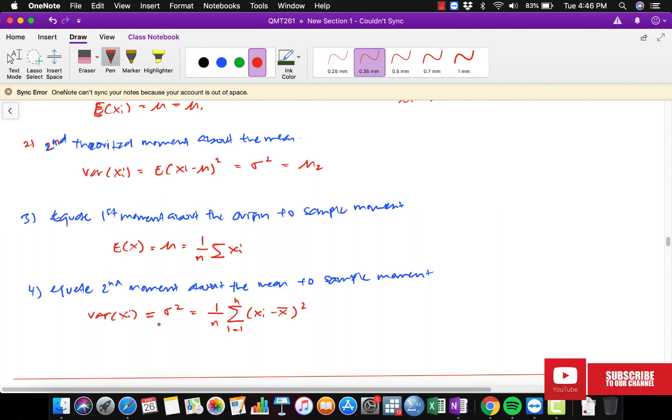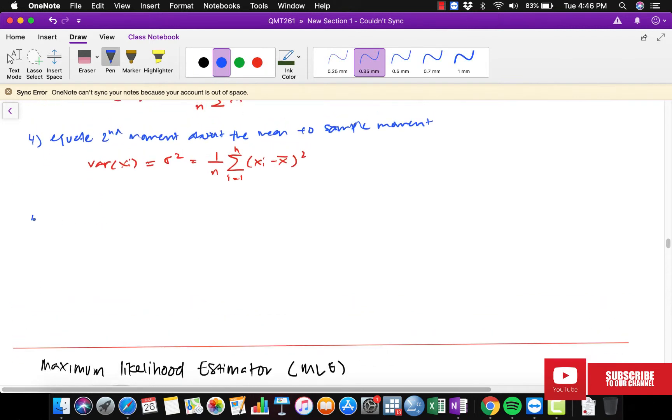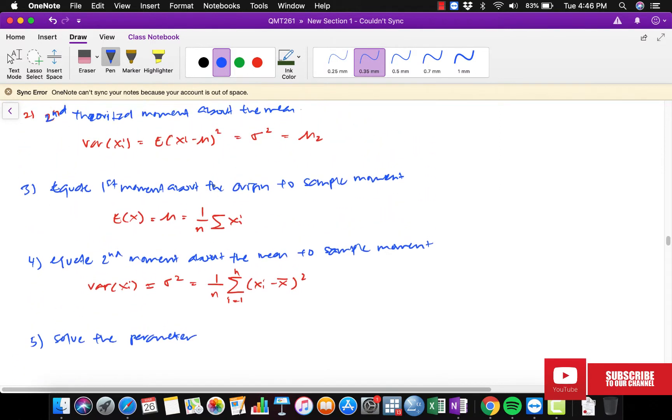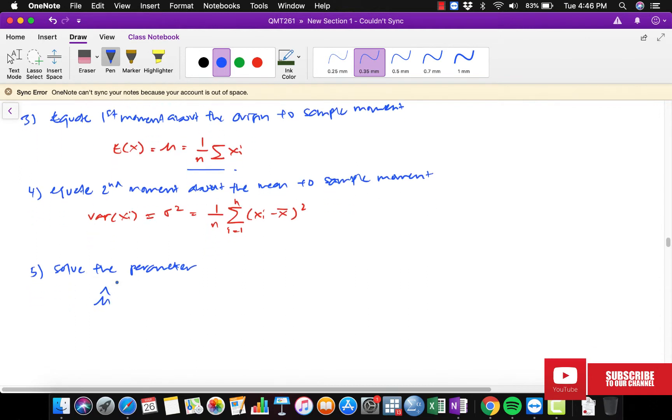So the last step would be step number five: we're going to solve the parameter. So mu hat will be equal to 1 over n summation of Xi, which is equal to X bar.